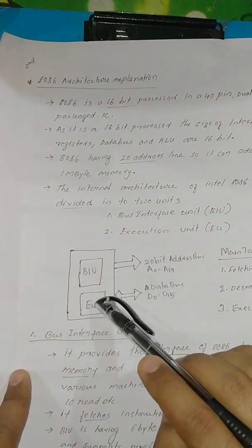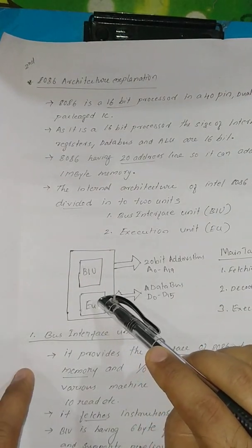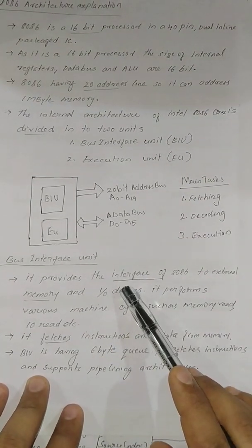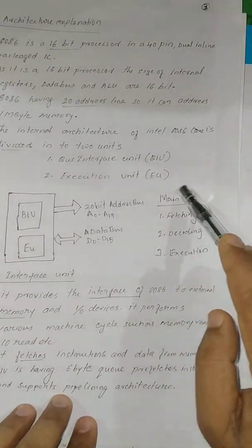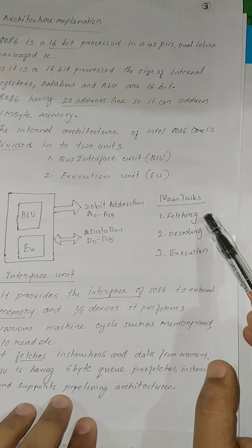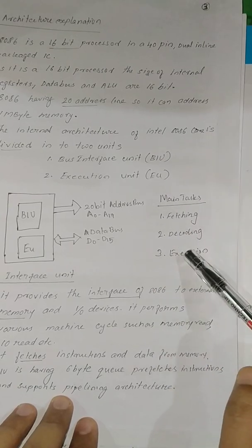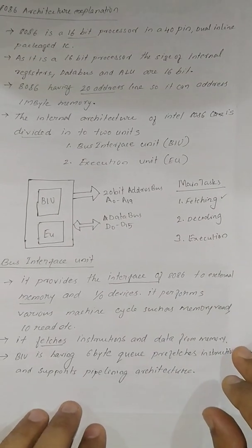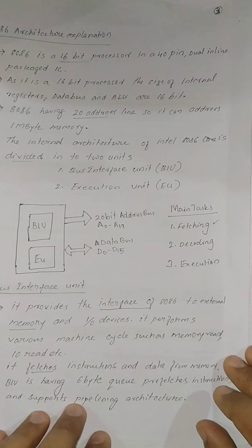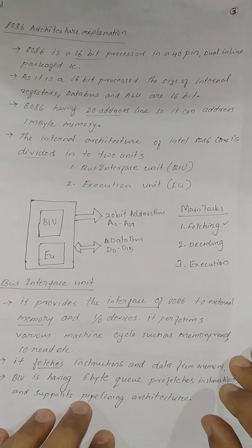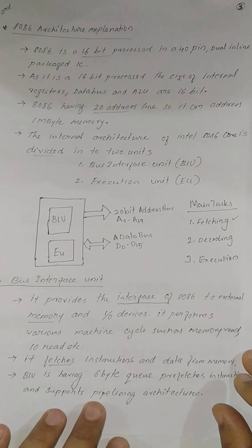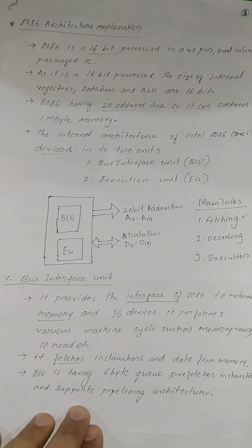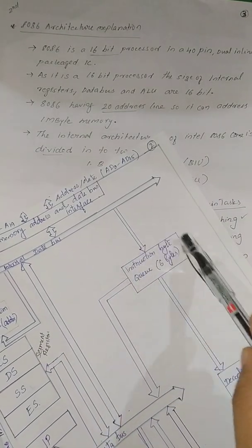The Bus Interface Unit handles the fetching operation. If we divide the main tasks of a microprocessor into fetching, decoding, and execution, fetching is done by the Bus Interface Unit. It fetches instructions and data from the external world — either memory or an I/O port. The Bus Interface Unit has a six-byte queue.